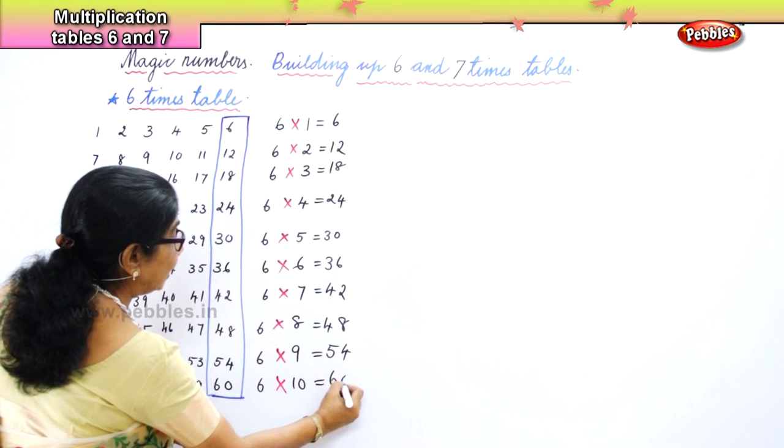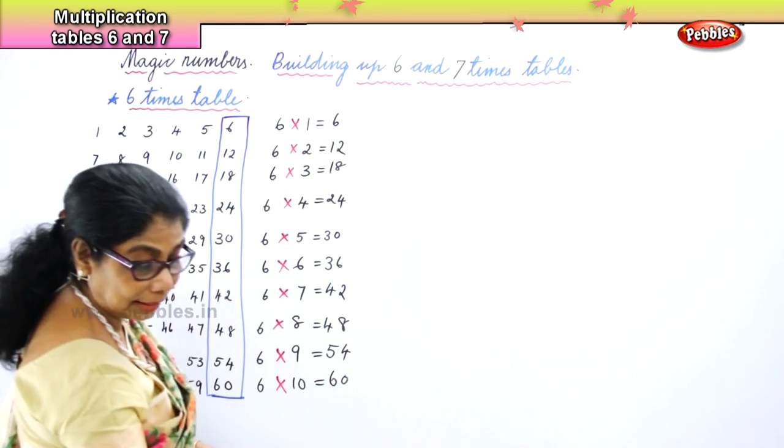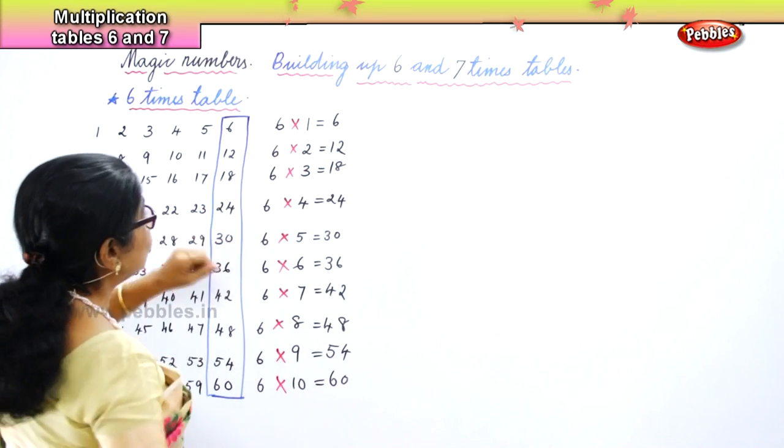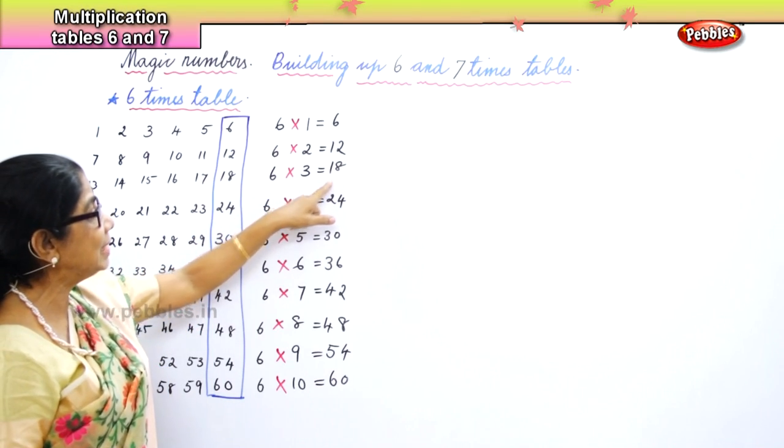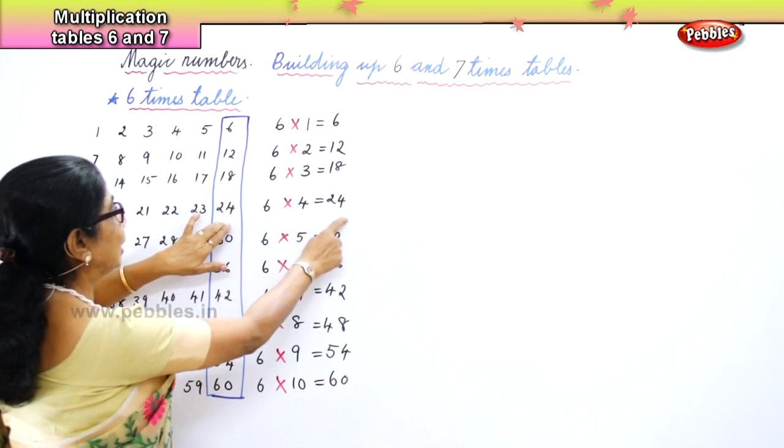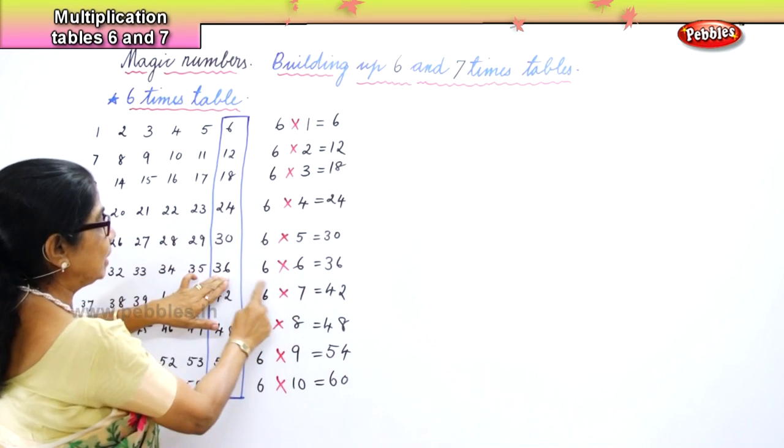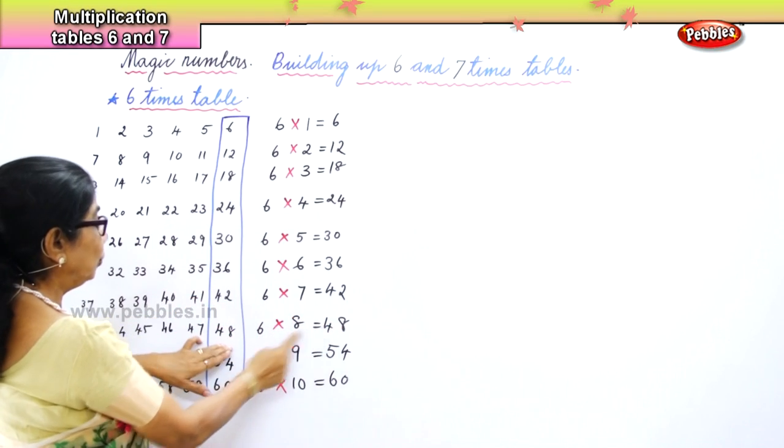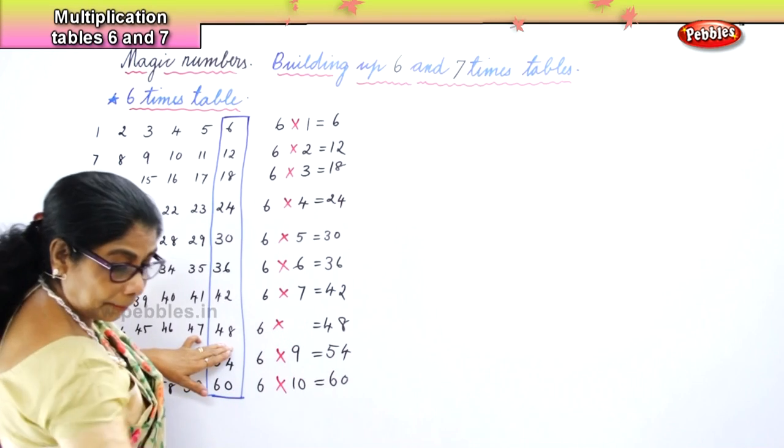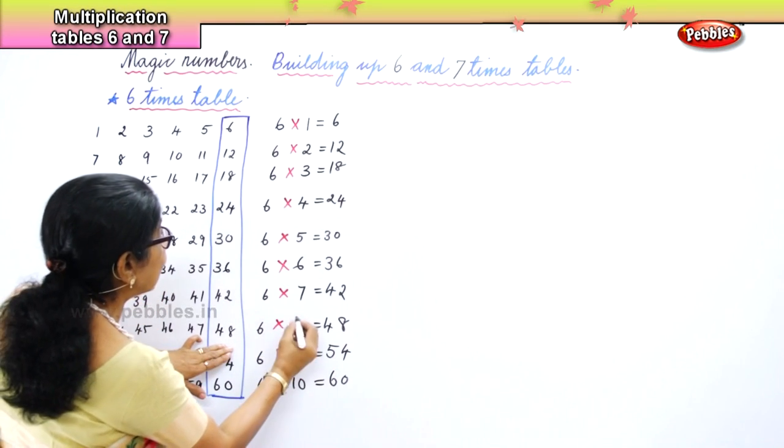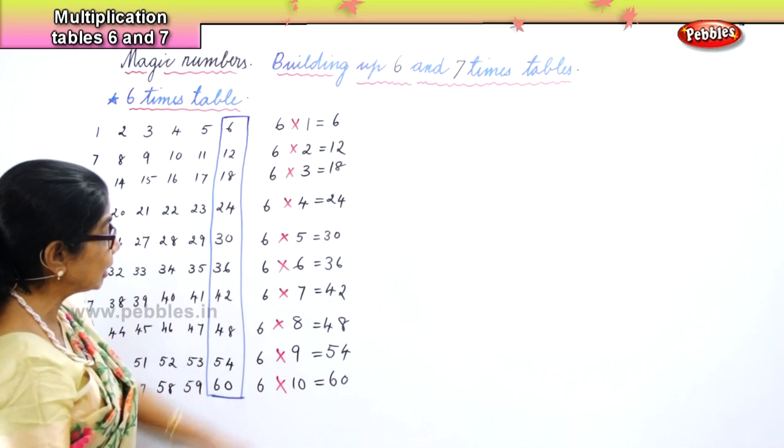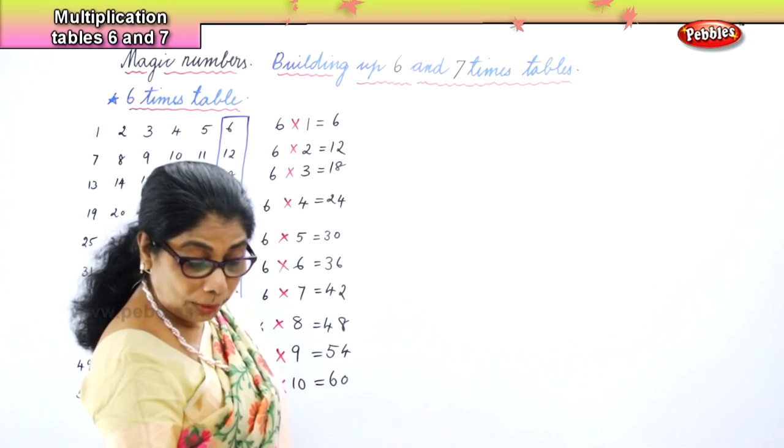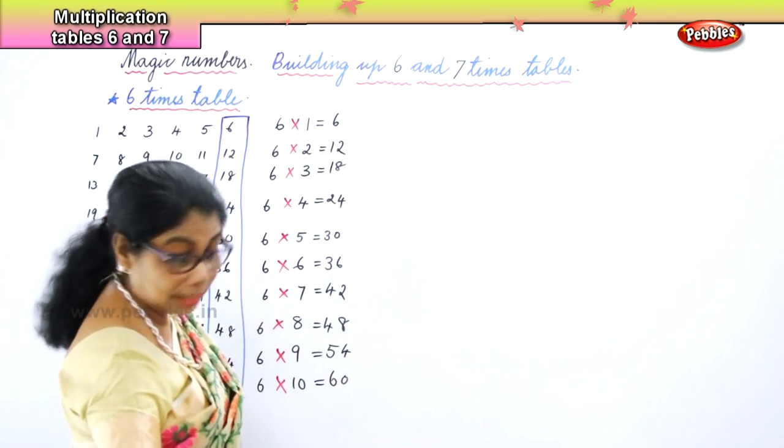Now let's read it along. 6 ones are 6, 6 twos are 12, 6 threes are 18, 6 fours are 24, 6 fives are 30, 6 sixes are 36, 6 sevens are 42, 6 eights are 48, 6 nines are 54, and 6 tens are 60. And that's how we build our 6 times table.